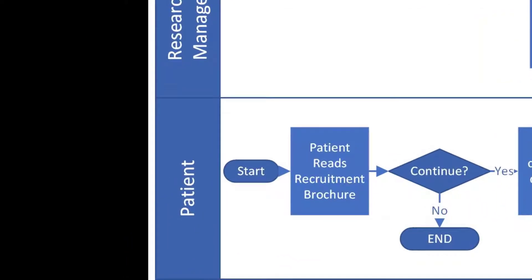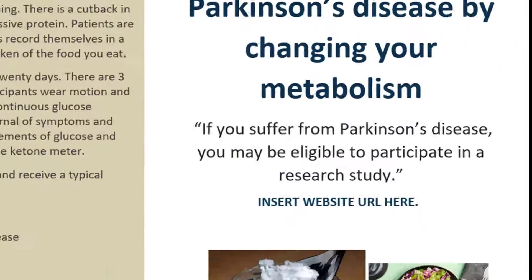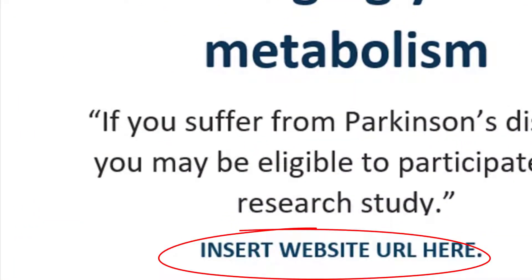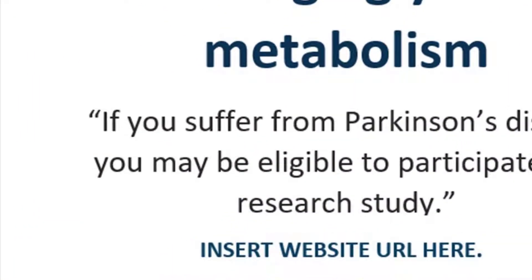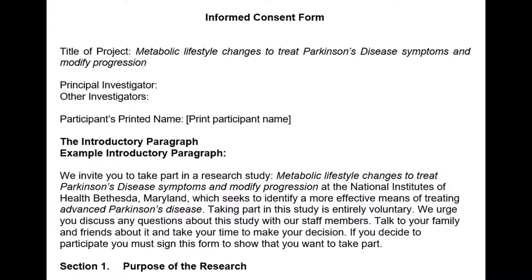It starts with the patient reading the recruitment brochure and deciding whether they want to continue or not. They might go to a website or call the phone number they see in the brochure and fill in a little bit of information that shows that they are qualified. If they qualify, the research manager then would administer the informed consent process and signing of the HIPAA documents.